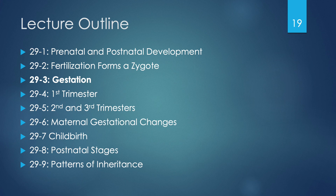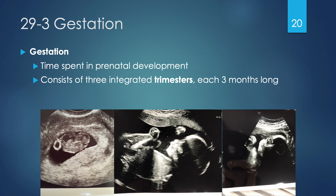Now let's discuss gestation. Gestation is the time spent in prenatal development, from day zero all the way through to delivery. It includes three integrated trimesters that blend together — each about three months long — resulting in a nine-month pregnancy. The images shown demonstrate the first, second, and third trimesters. By the third trimester the fetus becomes so large that on ultrasound only one major component of the body can be seen at a time.